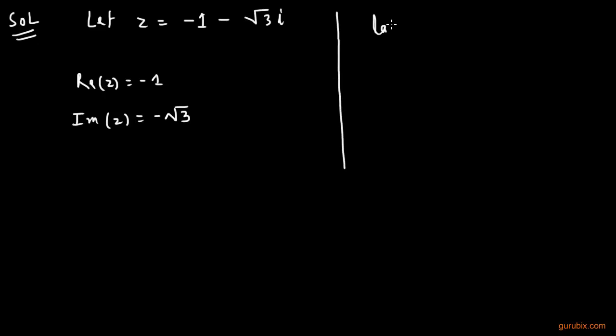Now we shall calculate tan alpha, where alpha is an acute angle which satisfies the condition modulus of imaginary part of z over real part of z. Here we have imaginary part minus root 3 and real part minus 1. This means that equals positive root 3.